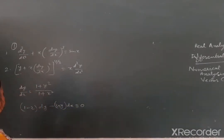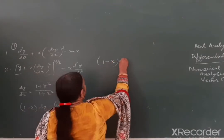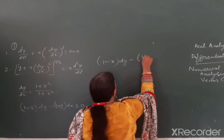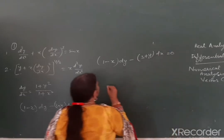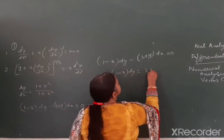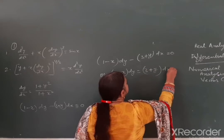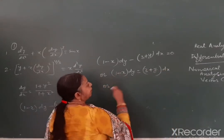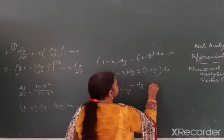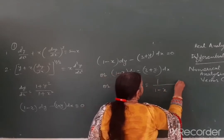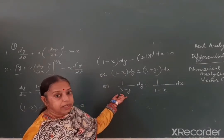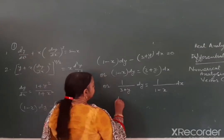Agla example hai: (1 - x) dy + (3 + y) dx is equal to 0. Aur hum isko likh sakti hain: (1 - x) dy = -(3 + y) dx. Aur ab hum inko alag kar lein - variables ko. Toh ye ho jaayega: 1/(3 + y) dy is equal to 1/(1 - x) dx. Aur usi tarah se phir se kya karenge - solve karne ke liye dono taraf integrate karenge, samaakalan karenge dono taraf - integrating both the sides.